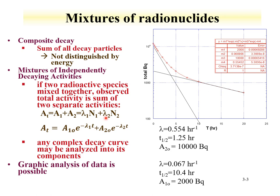The activity at any given time t is equal to the decay constant of isotope 1 times the number of atoms of isotope 1, plus the decay constant of isotope 2 times the number of atoms of isotope 2. We can rearrange this equation: the activity at any time t equals the initial activity of isotope 1 times e to the minus lambda-1 times t, plus the initial activity of isotope 2 times e to the minus lambda-2 times t. We can solve for lambda-1, lambda-2, A1-0, and A2-0.